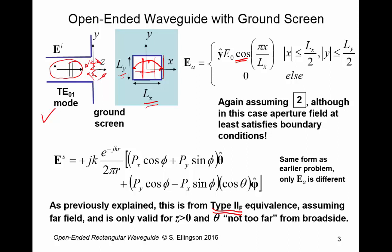And this should all be old news. Also, note that it's the exact same form as the earlier problem, the problem we solved in a previous lecture. The only thing that changes here is the aperture fields, which changes these factors px and py, which you hopefully recall are spatial Fourier transforms of the field in the aperture.